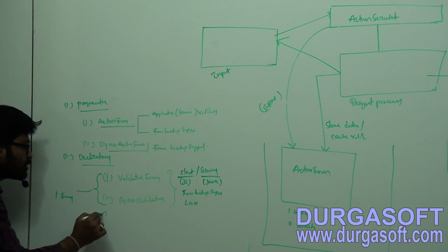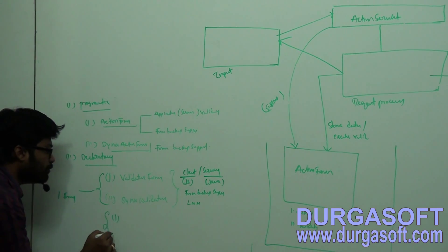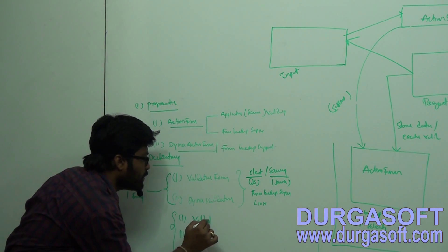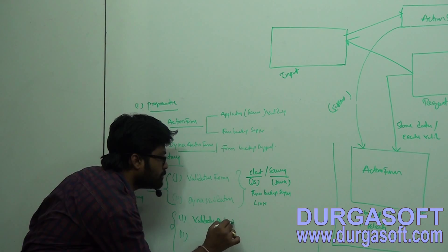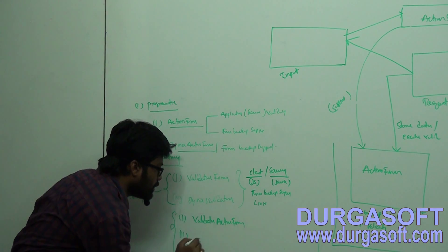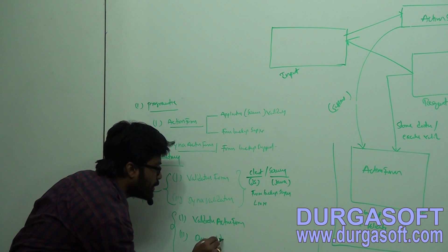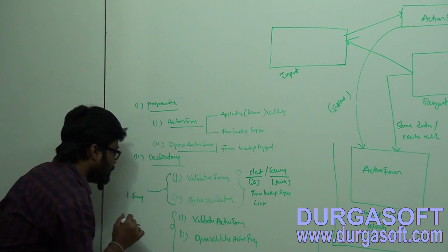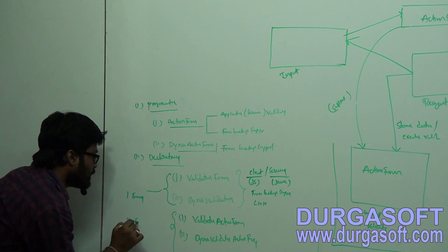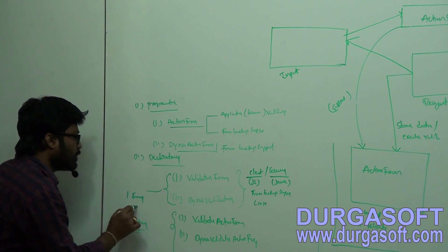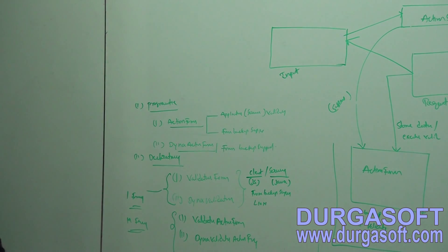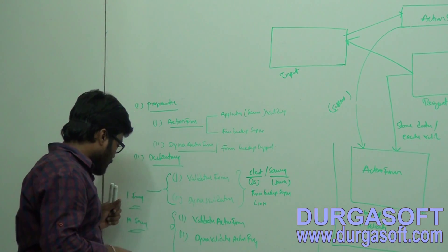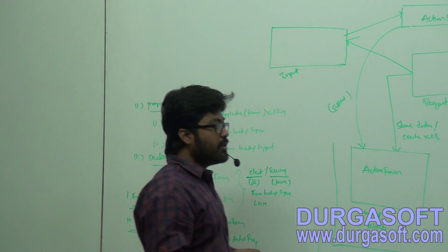These two classes — ValidatorForm and DynaValidatorForm — are for handling single form operations. To handle multi-form operations, we have ValidatorActionForm and DynaValidatorActionForm. Using these we can do multi-form handling, while the previous two are useful for single form handling.